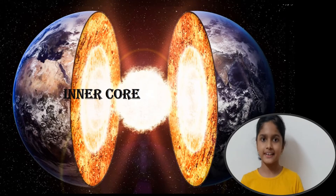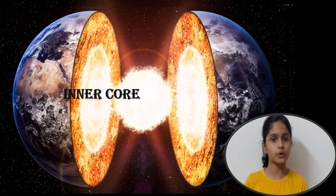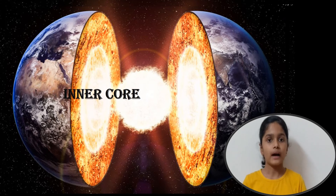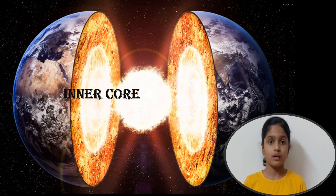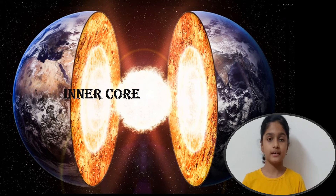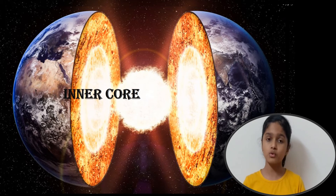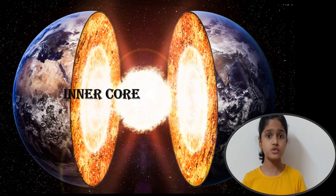The last layer of the earth is the inner core. The inner core is made up of iron and nickel metal, just like the outer core. It is the hottest part of the earth. The temperature of the inner core is almost 5,200 degrees Celsius.